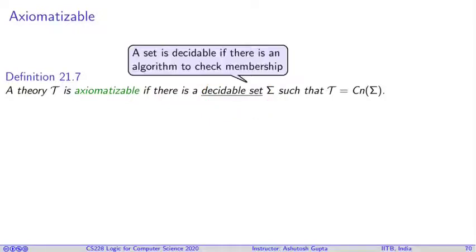What do you mean by decidable? A set is decidable if there is an algorithm to check membership. If we give you a sentence F and you want to check if F is an element of sigma, you can use some algorithm. For example, if sigma is a finite set, then of course you can simply enumerate all the elements of sigma and check if they are equal to F or not.